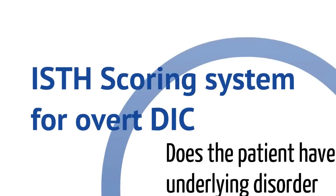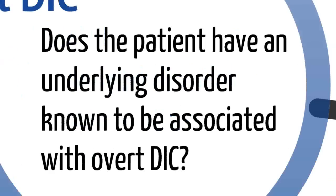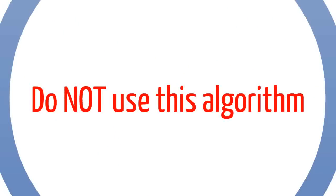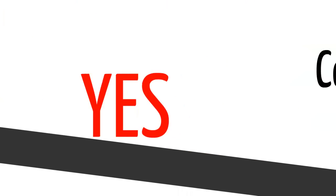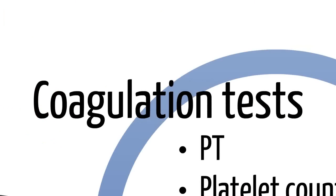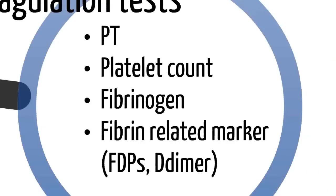Let's go over the system for DIC. First off, you want to know: does this patient have an underlying disorder known to be associated with overt DIC? If the answer is no, then you cannot use the scoring system. However, if the patient does have an underlying disorder associated with DIC, you need to obtain coagulation tests — your PT, platelet count, fibrinogen, and a fibrin-related marker such as FDPs or D-dimer.